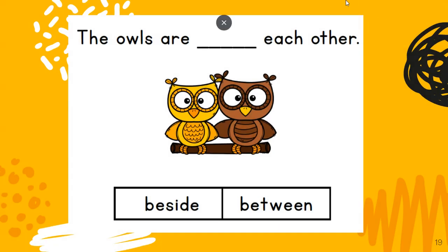The owls are next to each other. Are they beside each other or between? Remember, the word between means there are three things or more, so it can't be between — they are beside each other. Another word for beside is next to. So the owls are beside each other.